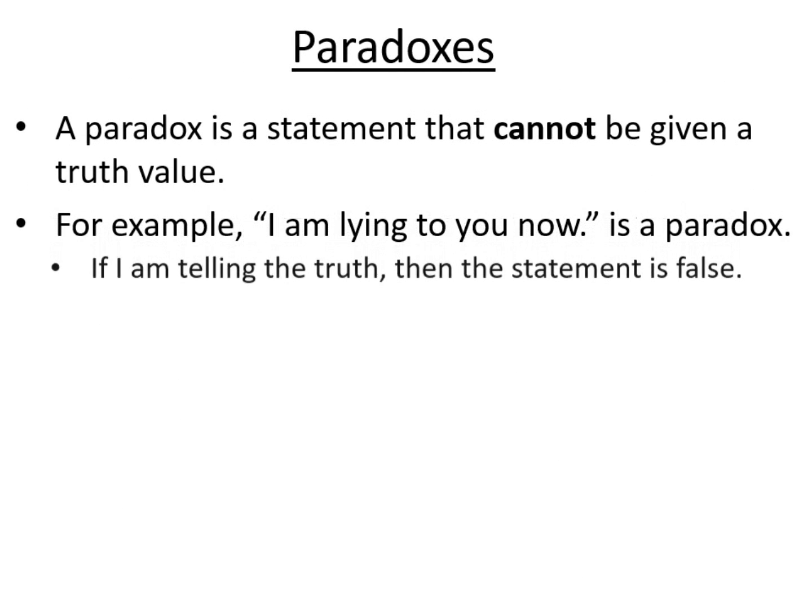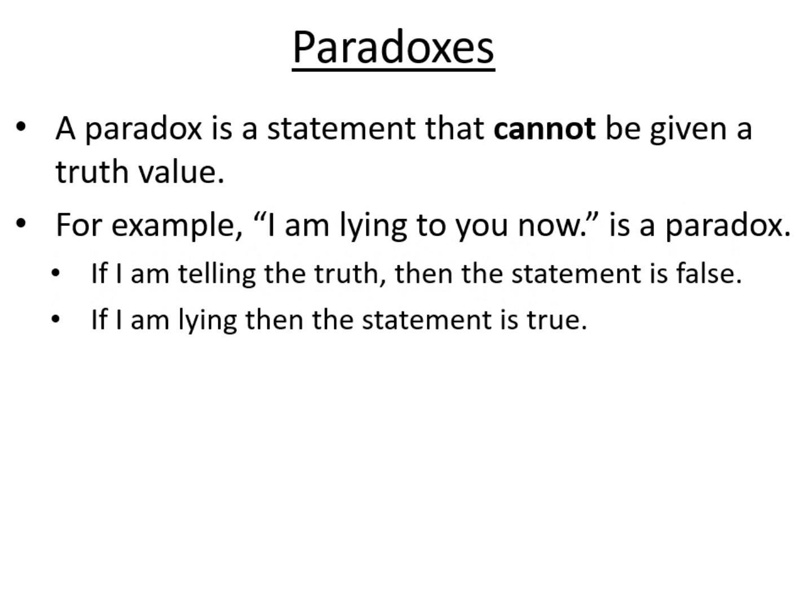So there are some kinds of statements that cannot be given a truth value, and these are called paradoxes. For example, I am lying to you now. This is a paradox. If I am telling the truth when I say I'm lying to you, then I'm actually not lying to you, and therefore the statement is false.